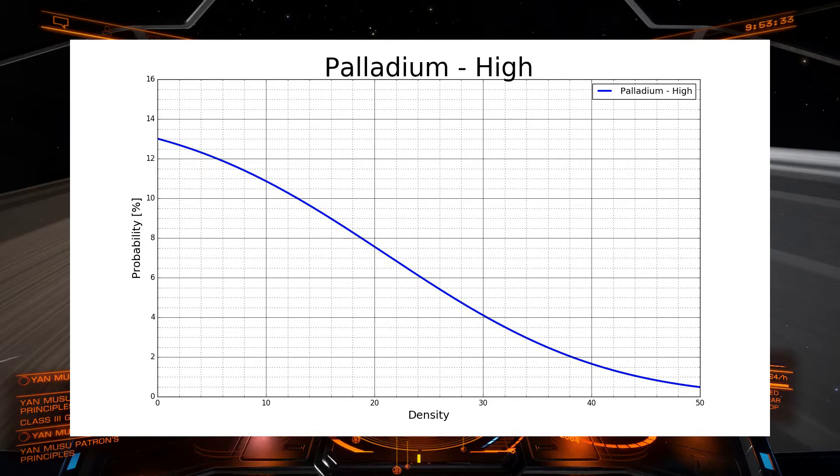So what we can see is this curve basically shows us what is the chance of getting a certain percentage or higher when scanning a rock. For instance, if we look at zero density, we see there's a probability of around 13%. So that means when I went into the high density area, I found that 13% of the rocks contained palladium, and they contained 0% or higher.